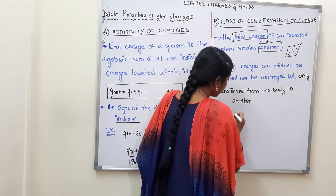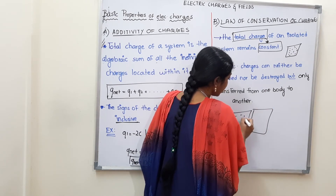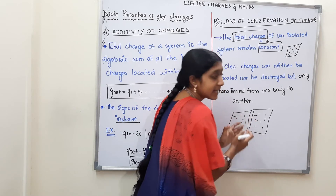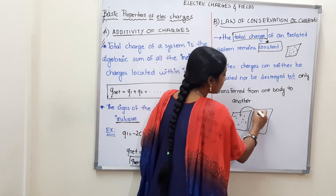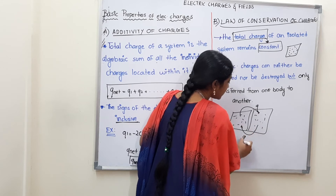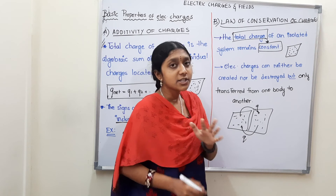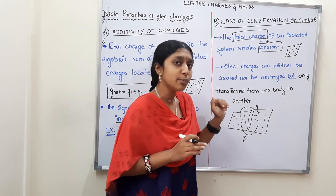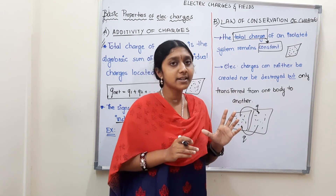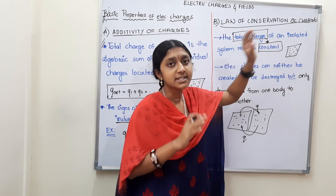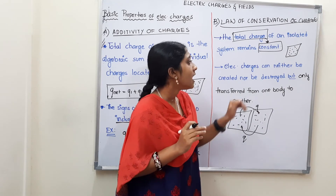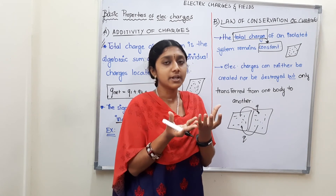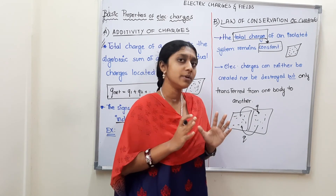For example, there is one system and there is another system, each with many charges. These two are in contact. The charge is transferred between them, but the total charge is not created or destroyed. The total charges in the combined system remain constant. The charge is only transferred, not destroyed.